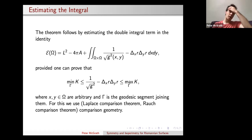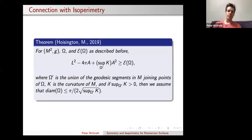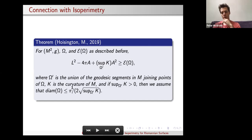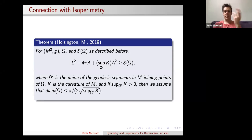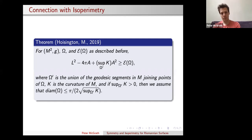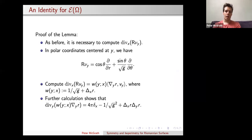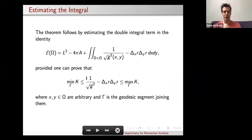I should mention this small technical point: going back to the statement of the theorem, this is the diameter bound we require. We suspect this diameter bound is not optimal. We suspect the optimal diameter bound would be roughly that the diameter of the domain is at most pi over two (i.e., a hemisphere) in the case where the curvature is one. It would be nice to figure out how to improve that by finding a better estimate for this double integral.